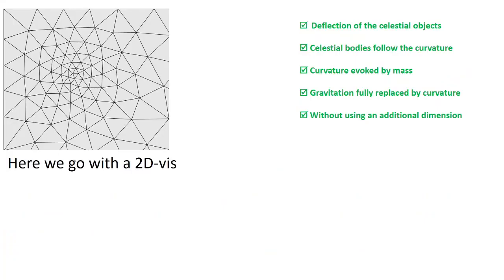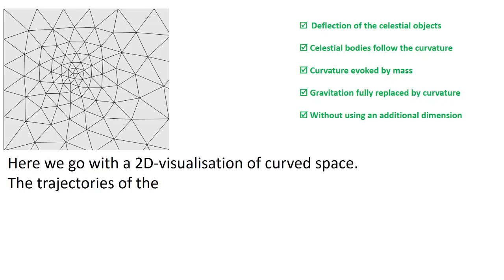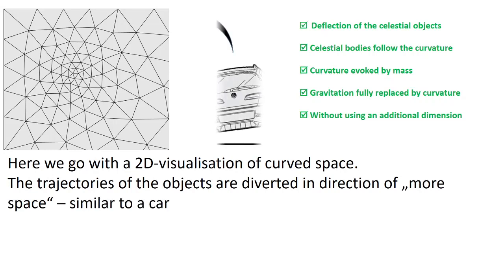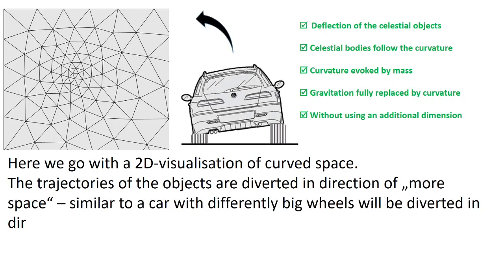Here we go with a 2D visualization of curved space. The trajectories of the objects are diverted in direction of more space. Similar to a car with differently big wheels will be diverted in direction to the smaller, more compact wheel.